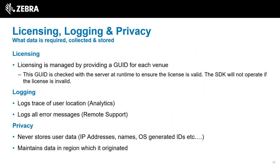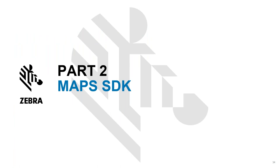For licensing and privacy: the licensing is managed by providing a GUID for each venue, checked with the server at runtime to ensure it's valid. If the license isn't valid, the SDK won't operate and may not throw an error either - something to note. In terms of logging, the server logs a trace of the user's location and all error messages for analytics and remote support, but it never stores user data - all data is completely anonymized and according to Signify all data is maintained in the region which it originated.